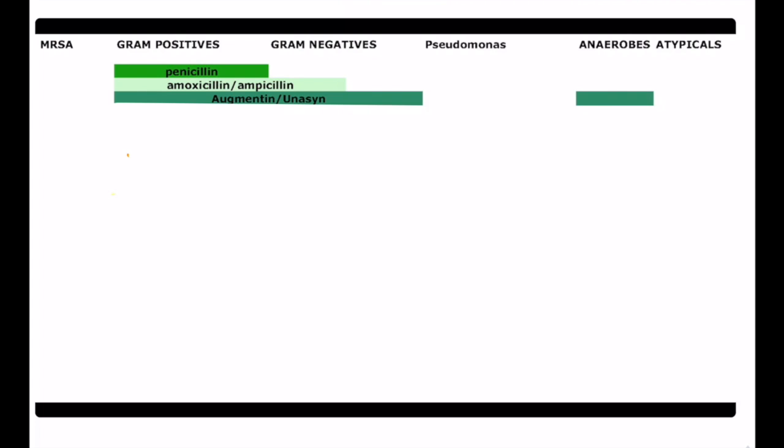Augmentin and Unison both cover gram positives, gram negatives, as well as anaerobes. So sometimes I used to get confused like which ones cover anaerobes, which don't cover anaerobes, but this chart is going to make your life a lot easier.